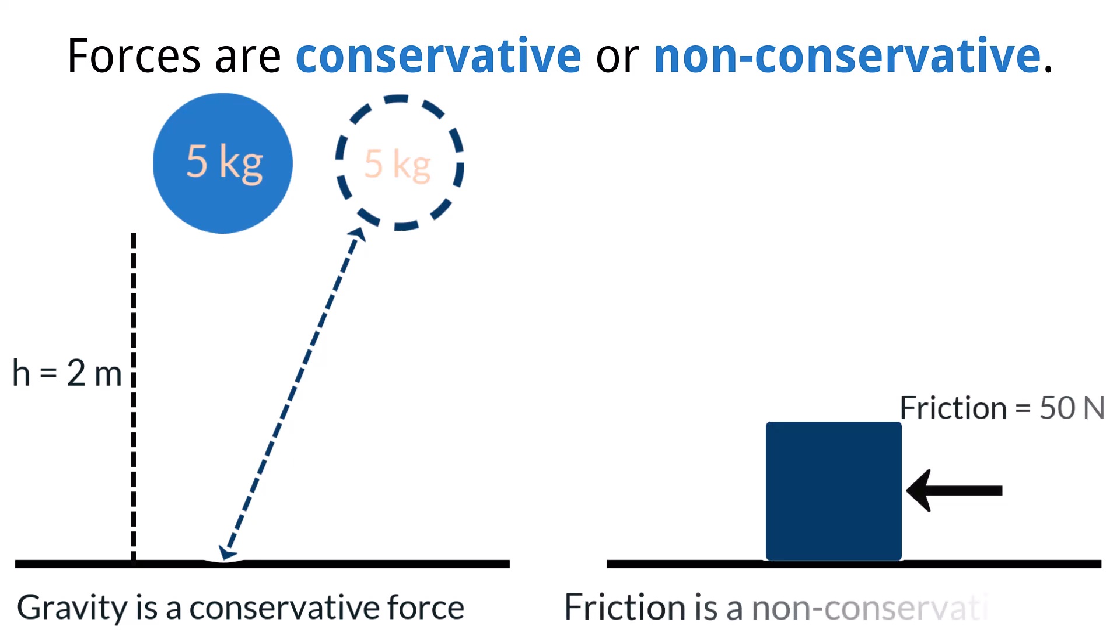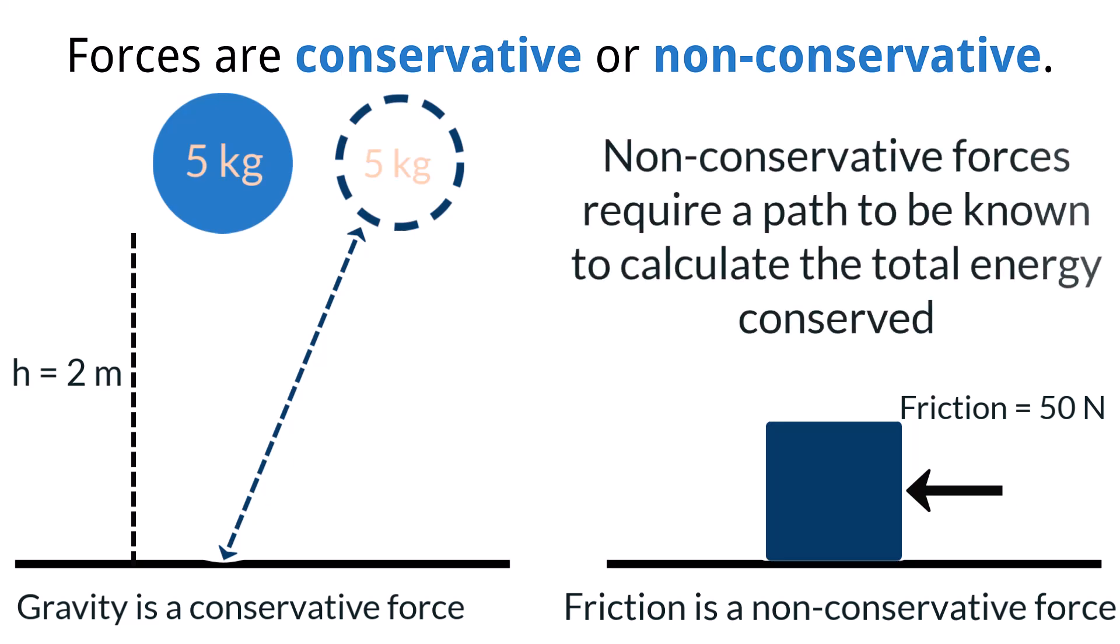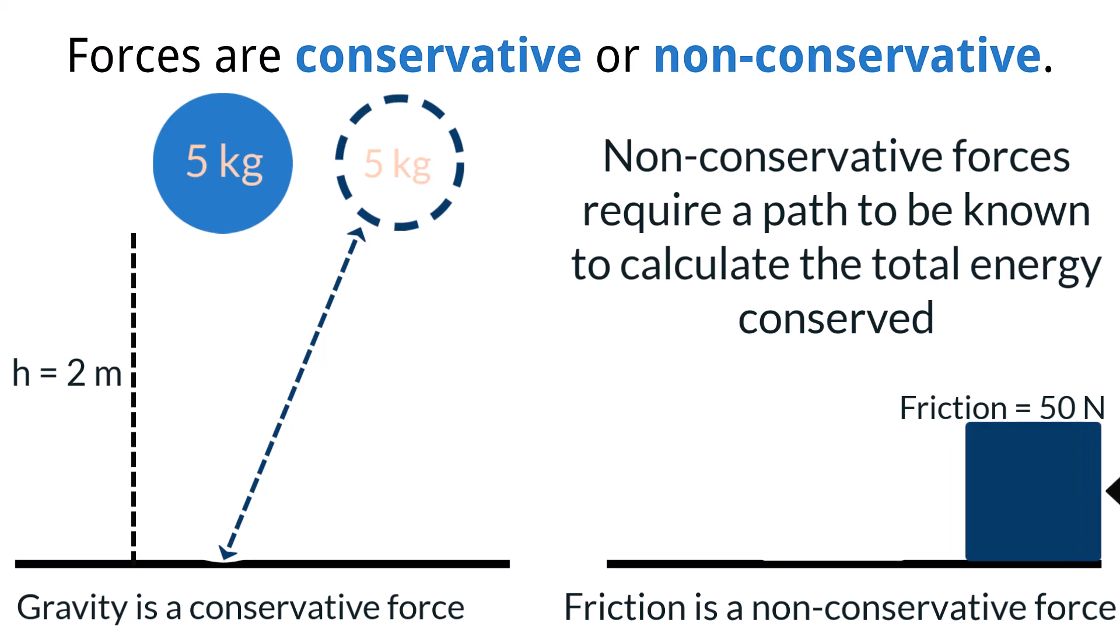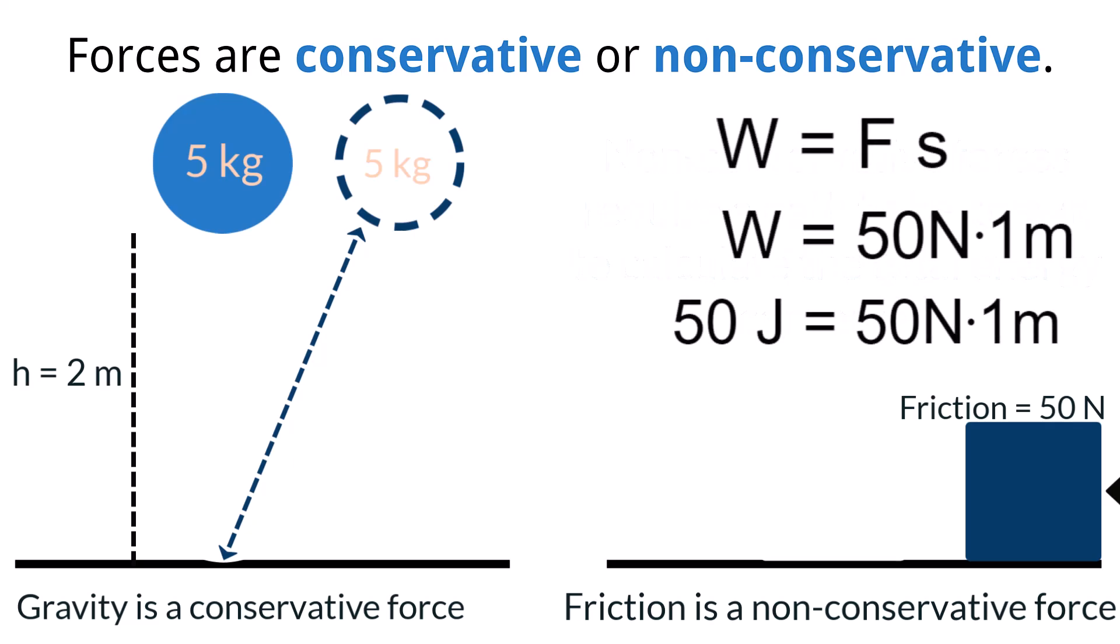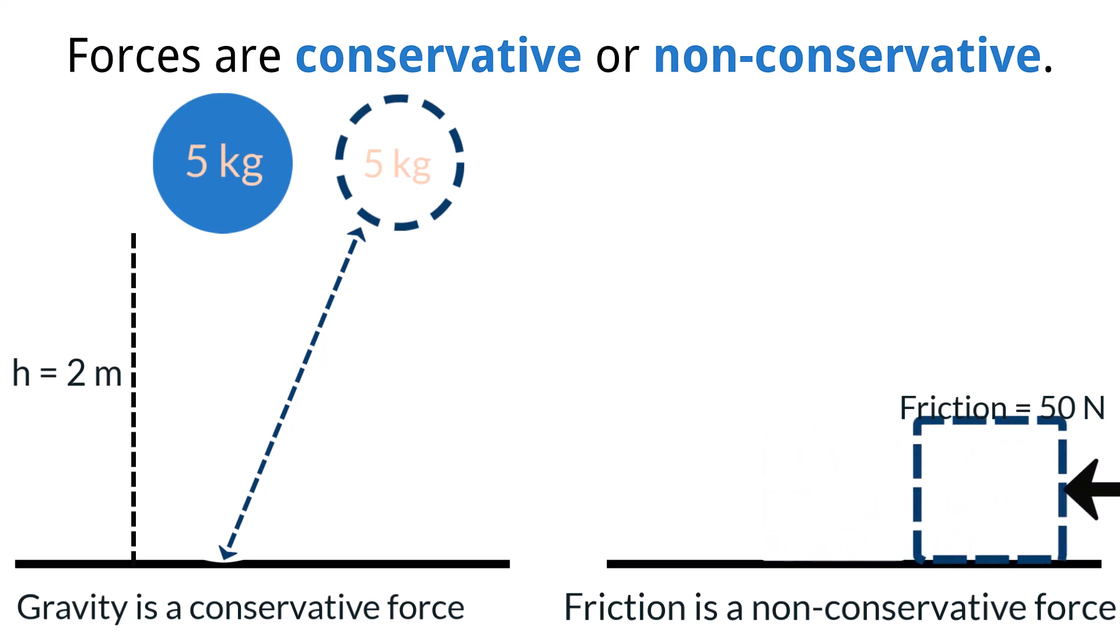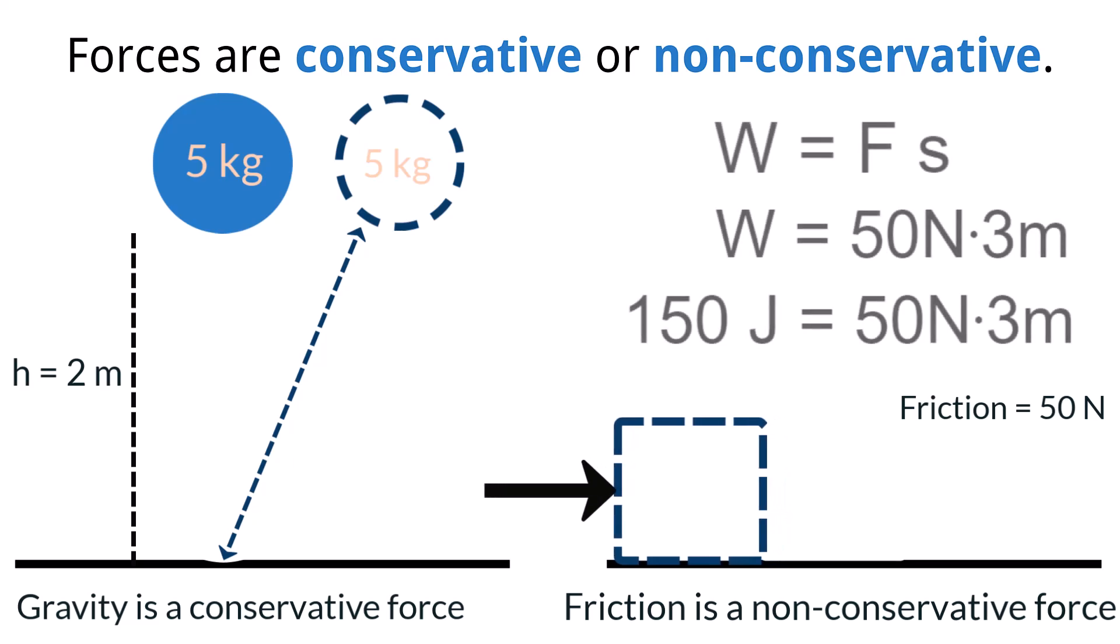This is not true, however, for forces like friction, which are considered to be non-conservative. Non-conservative forces require the path to be known to calculate the total energy conserved. Take for instance a box that is pushed with a constant force and the frictional force of 50 newtons is applied to the box. If the box moves in a straight horizontal line a distance of 1 meter, the work done on that box by the frictional force is 50 joules. However, if that same force of friction is applied to the box, and the box travels distance of 1 meter to the right, and then 2 meters back to the left, the distance traveled would be 3 meters total. The total work done by the force of friction is 150 joules. This shows that in the case of some forces, the distance traveled plays a large factor in the amount of transferred energy.